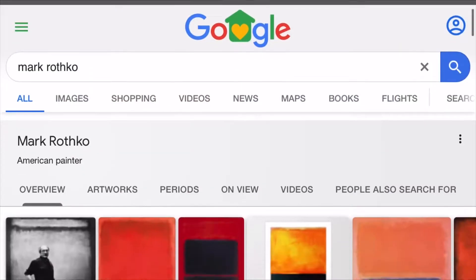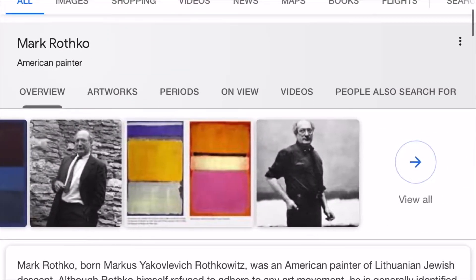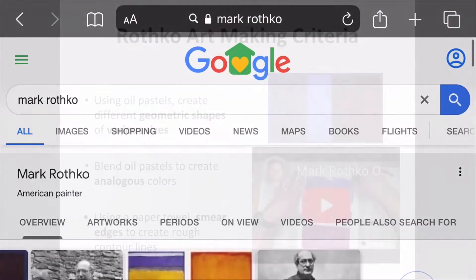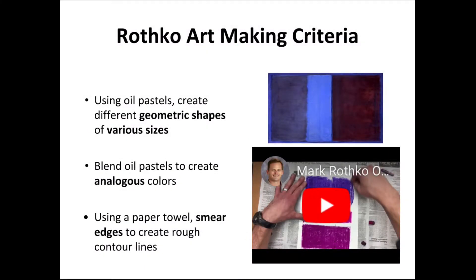If you successfully looked at some different examples of Mark Rothko's work or read some articles about Mark Rothko, you are now ready to create your art making project, which is today's expectations. You're going to be using your art making medium of choice to create different geometric shapes of various sizes, making sure that you're using analogous colors, working on a piece of paper.